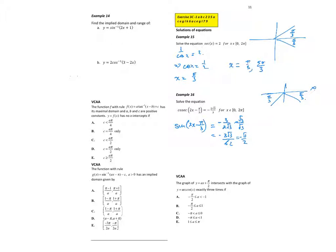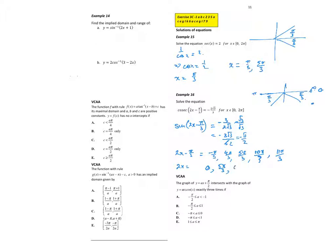Because of the 2x, we go around twice. Starting at 2x - π/3 = -π/3, then going to 4π/3, 5π/3, 10π/3, 11π/3. Adding π/3 to every answer gives 0, 5π/3, 6π/3, 11π/3, 12π/3.